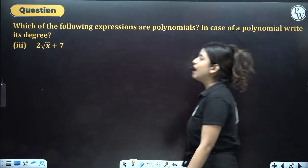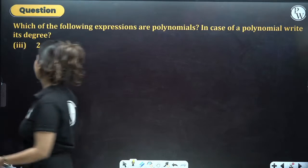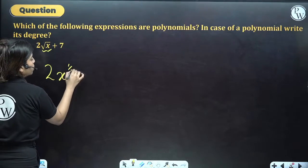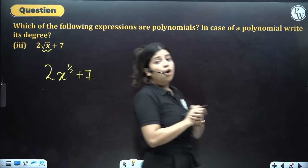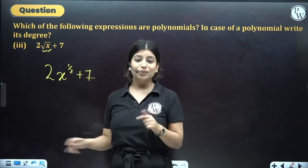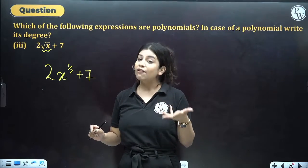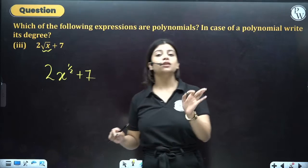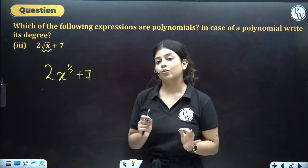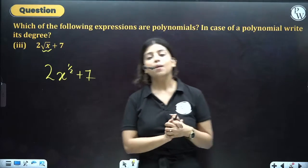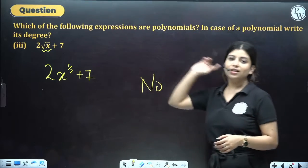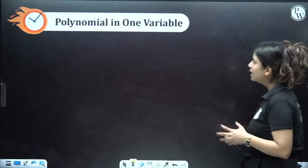The next expression is 2√x + 7. Now, √x means x^(1/2) + 7. The power of the variable must be a whole number, but 1/2 is not a whole number — it is a fractional number. If a fractional power is included in the expression, it cannot be called a polynomial. So we say: no, this expression is not a polynomial.